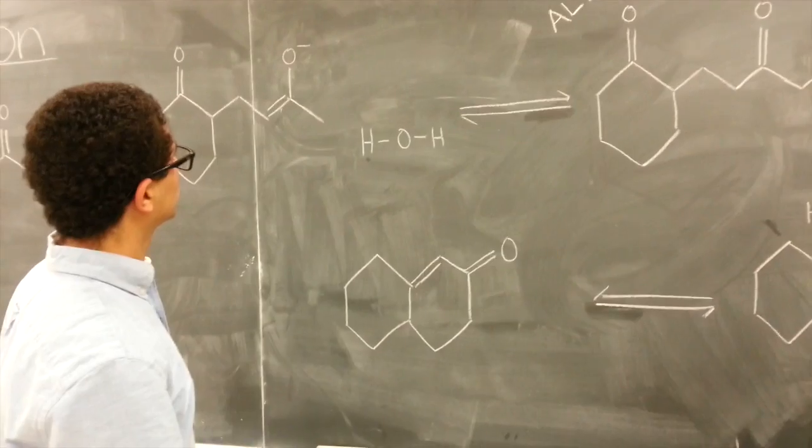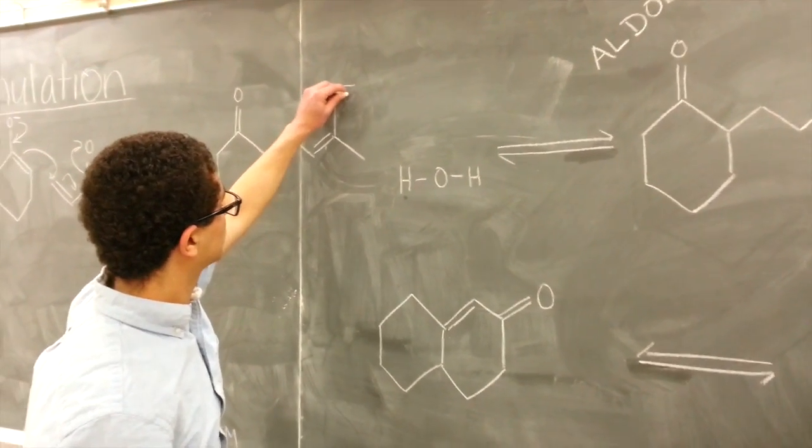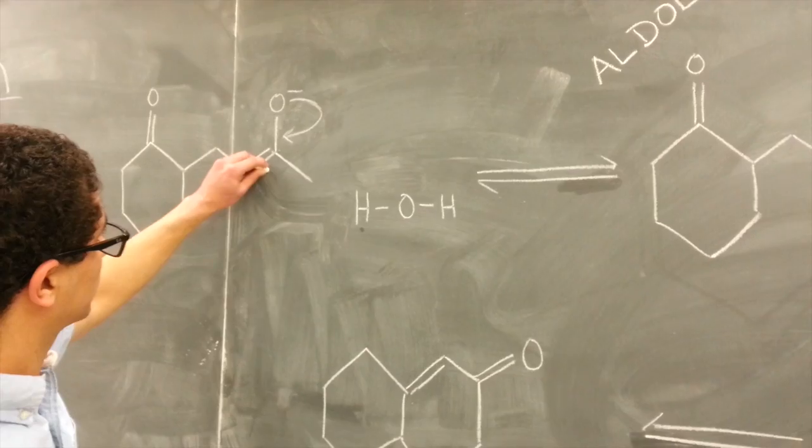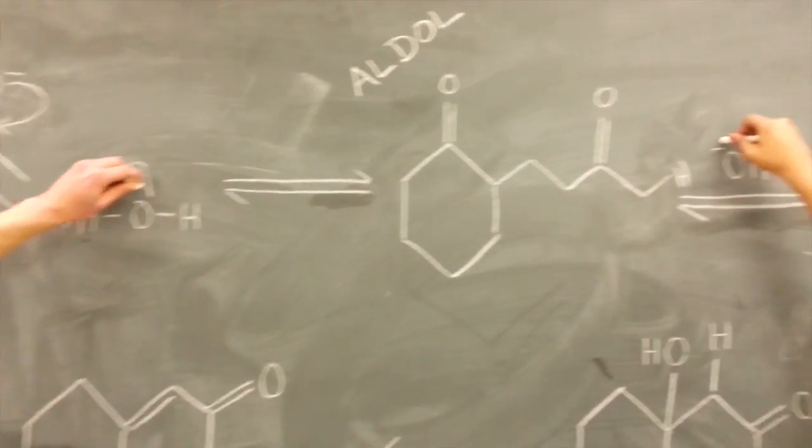Robinson Annulation. Michael Aldol Condensation. Basic condition. Deprotonation. This is the basis of the mechanism. The now newly formed is a nice double bond. Which grabs H from water. This step is now over. And we form a carbonyl one more time.